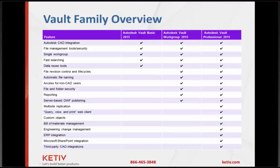Before we started, I wanted to give a quick high-level overview of the Vault family of products. Vault Basic comes with all of our suites out of the box. If you need additional functionality, you can purchase Vault Workgroup or Vault Professional. One key point: Vault Office only works with Vault Professional or Vault Workgroup. So if you're on Vault Basic, you will also need to look at upgrading the version of Vault you currently use.